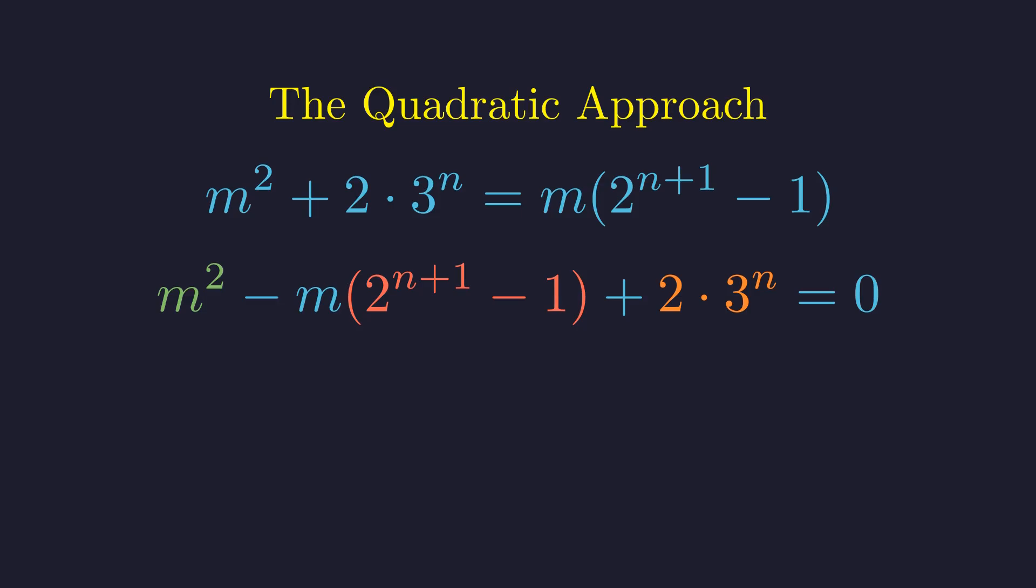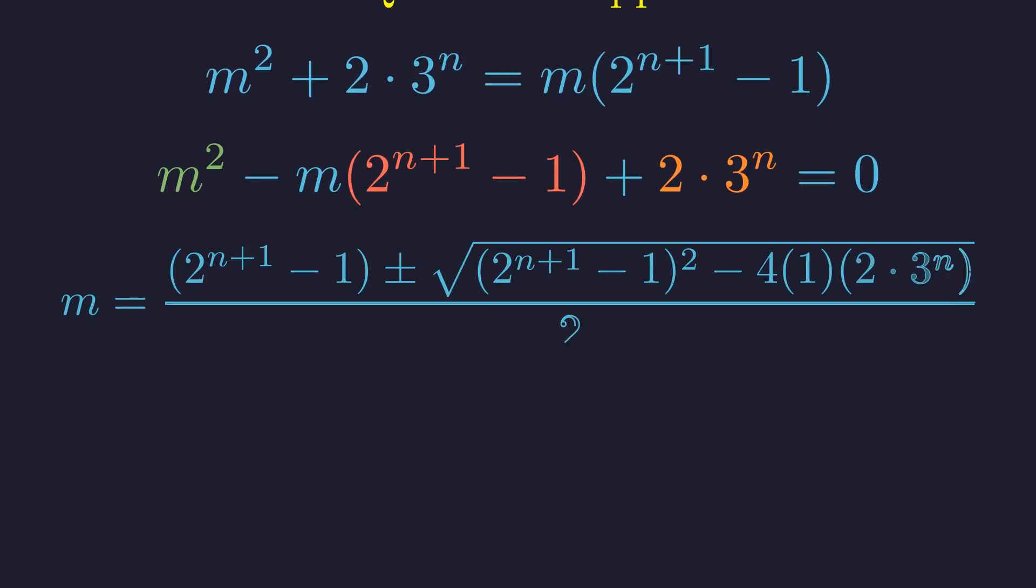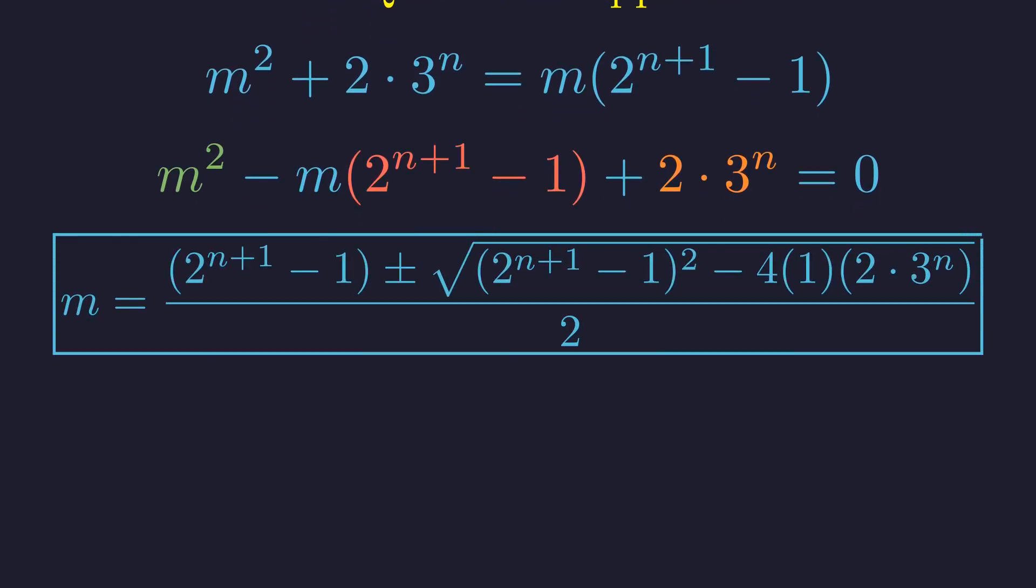Since m must be an integer, the solutions given by the quadratic formula must also be integers. This imposes a significant constraint on the discriminant of the equation. Applying the quadratic formula yields the following expression for m. For m to be an integer, the expression under the square root, the discriminant, must be a perfect square of a non-negative integer.